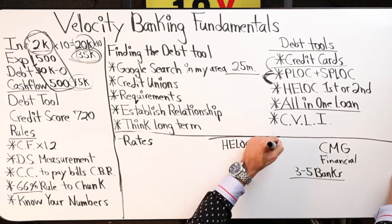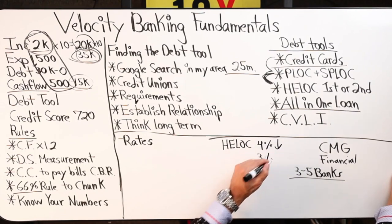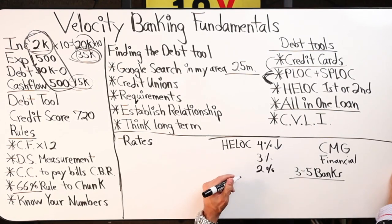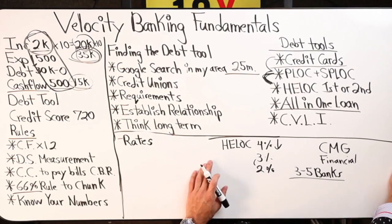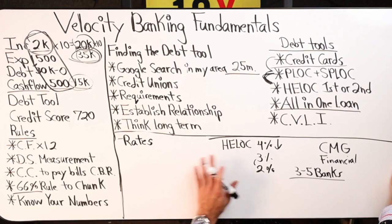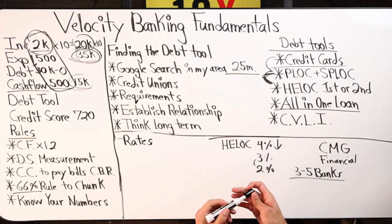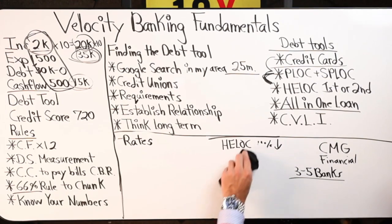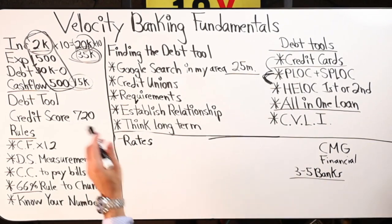For a HELOC, anything below four percent right now is awesome. If you get three percent, you're doing great. Below two percent — you're amazing. Between two and three percent, you're killing it. At two or three percent, you're going to go faster than velocity banking. Those are the rates you're ideally looking for — know your range, look at the rates.